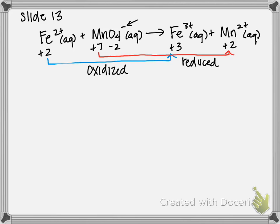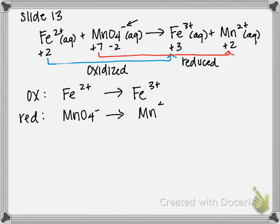Step 2 is to separate these two into their individual half reactions. My oxidation is simply iron 2+ produces iron 3+. And my reduction is MnO4- produces Mn2+.